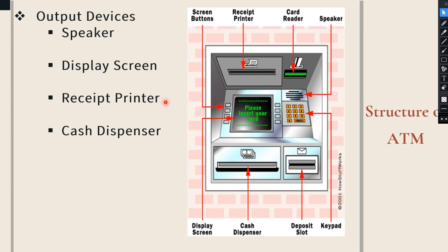The third output device is the receipt printer. After completing our transaction, we get a printed receipt from this machine. After withdrawing money, we get a receipt showing how much money was withdrawn and the remaining balance. When we request a mini statement or balance inquiry, we also get a printed receipt from the receipt printer.